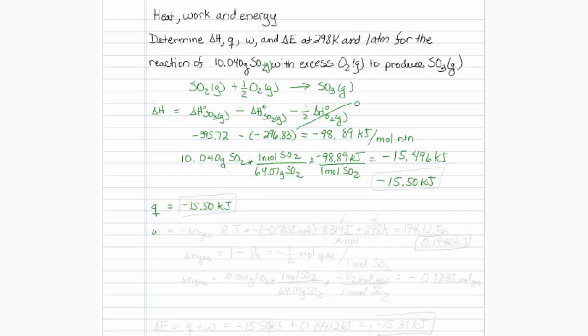Next problem is work. Now for work I'm going to have to look at the change in the moles of gas times R times T. So let's figure out the change in moles of gas for this reaction. My final moles of gas is one, and my initial moles of gas is one and a half. So my change of moles in gas is minus one half a mole of gas per mole of reaction as written.